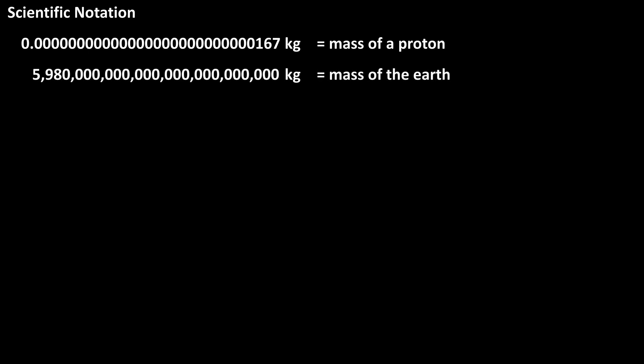Measurements can range from very small to very large. For instance, this number is the approximate mass of a proton, and this number is the approximate mass of the earth. Writing these very small or very large numbers can be tedious and difficult to understand, so we have scientific notation to help us.